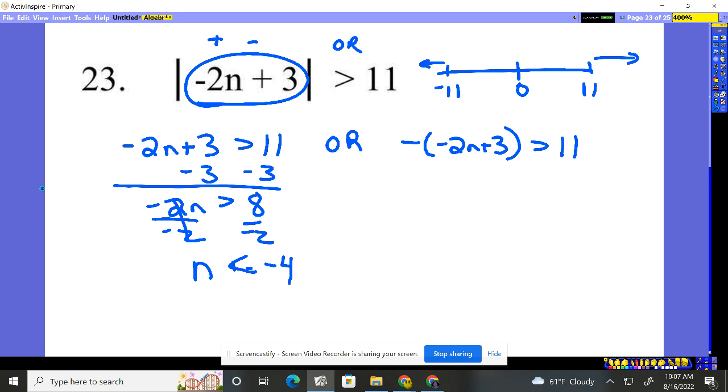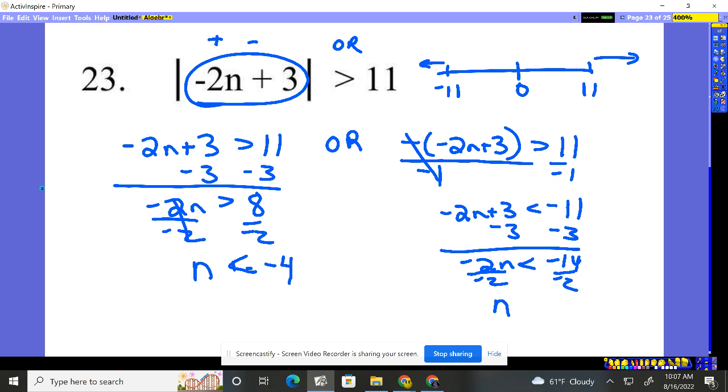So n is less than negative 4 over here. For the other side, first step: you always start by dividing by negative 1, which will flip the inequality. So 11 divided by negative 1 is negative 11. Subtract 3, subtract 3. Negative 2n less than negative 14. Divide by negative 2, and look what happens—it flips back.